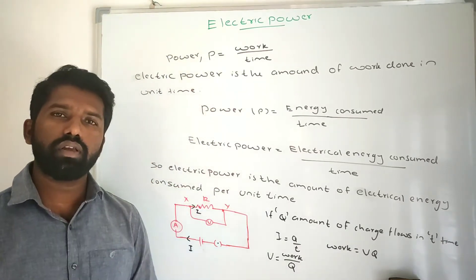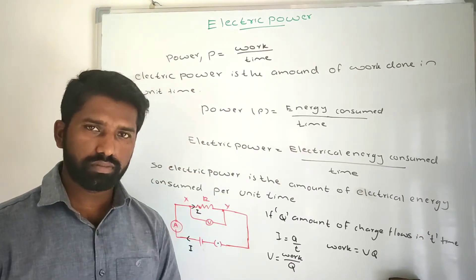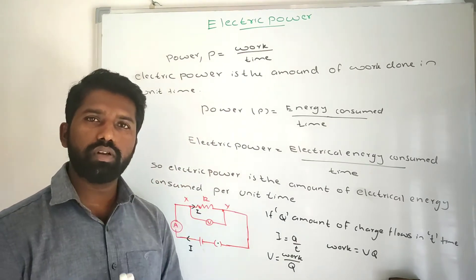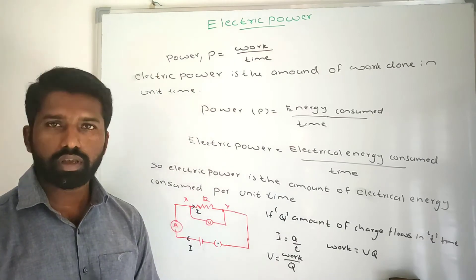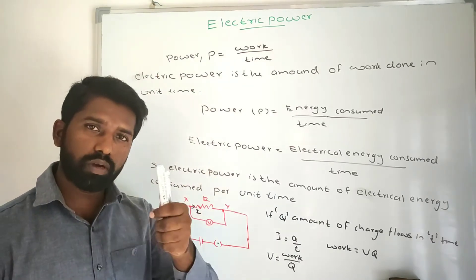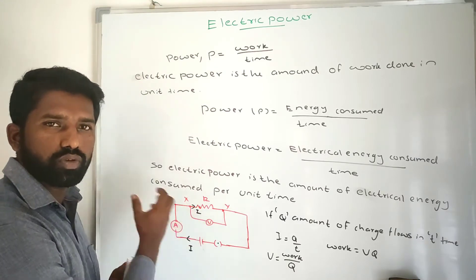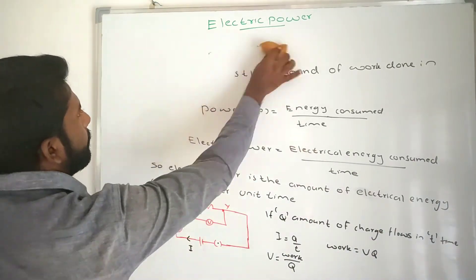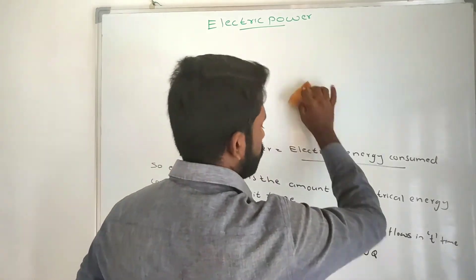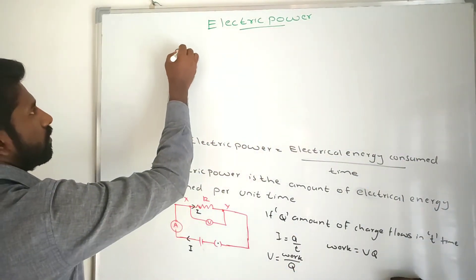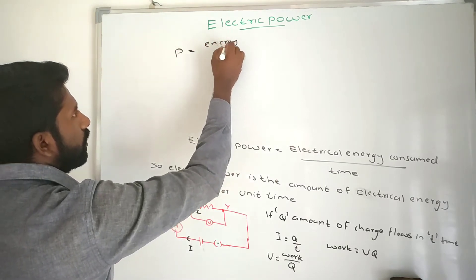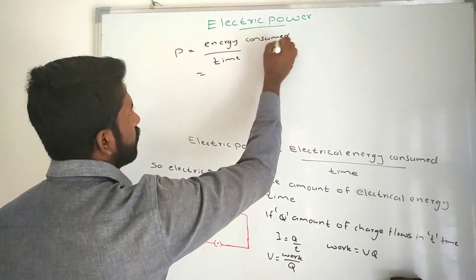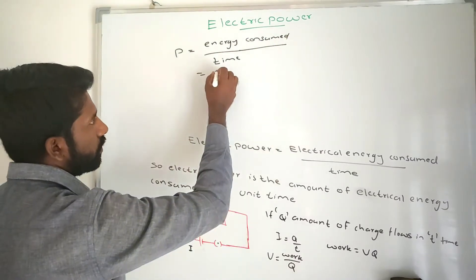This work done is converted into heat if this is a purely resistive device. If you replace this resistor with a bulb, the work done is converted into heat energy and light energy. So to do this work, some amount of energy is consumed from the source. That work done and consumed energy are equal. So power is equal to energy divided by time, and energy consumed is equal to work done.